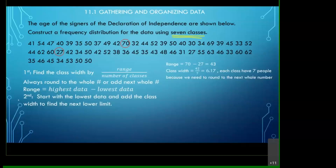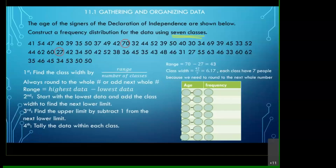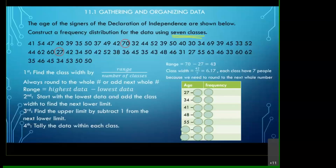Once we have the class width of 7, we start from the lowest data value and add the width each time we jump to the next class. We start at 27 because that's the lowest data point. Then 27 plus 7 gives 34; 34 plus 7 gives 41; and so on. Every time we jump to the next class, we add 7.